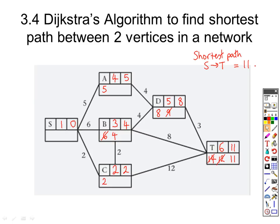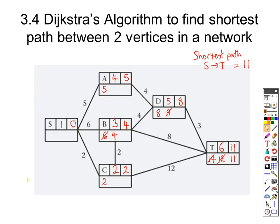Sometimes the question will then ask you to state the actual shortest path journey. We normally use a highlighter for this and we start at the end — at t — and work backwards. Our journey time is 11 at t and there are three places I can go backwards: back 3 to d, back 8 to b, or back 12 to c. Only one of those will be valid. The one that's okay is the one that takes me back to d, because 11 take away 3 gives me 8 and that all adds up. The other two options don't add up.